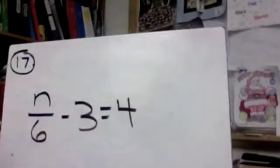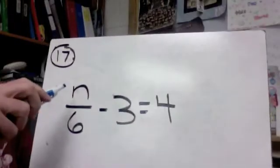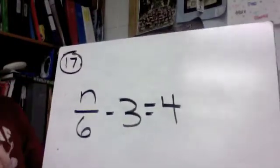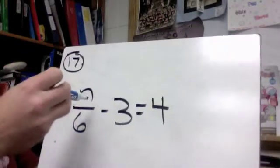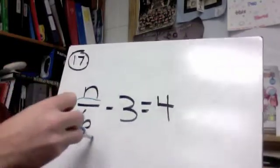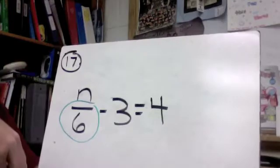All right, for problem 17, the variable is not x this time but it's n, so we still have to get that by itself. We've got to identify what we have here. So far we've got a divide by positive 6.